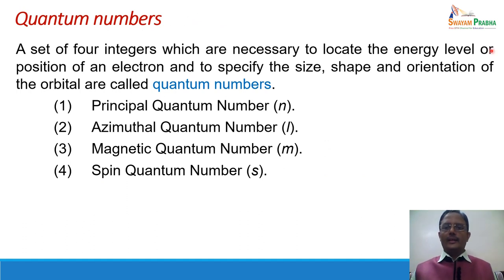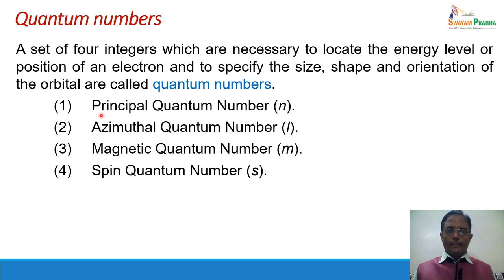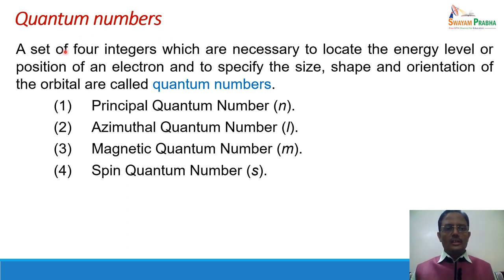Now we come to quantum numbers. Quantum numbers are a set of four integers necessary to locate the energy level or position of an electron and to specify the size, shape, and orientation of the orbital. There are four quantum numbers: principal quantum number, azimuthal quantum number, magnetic quantum number, and spin quantum number, denoted by n, l, m, and s respectively. These four numbers are necessary to determine the position of the electron and specify the shape, size, and orientation of the orbital in which it moves.